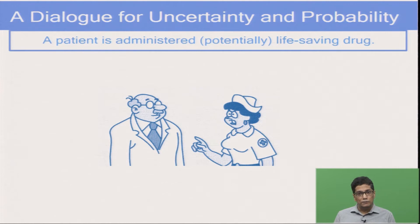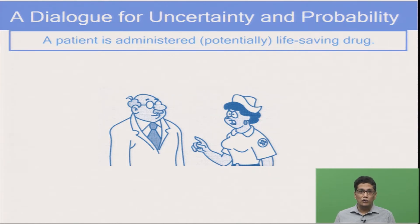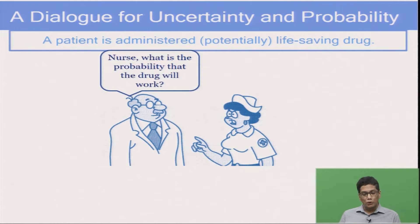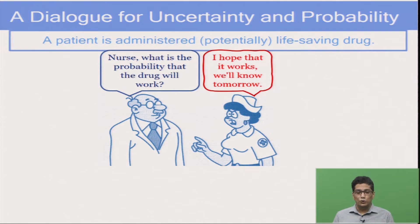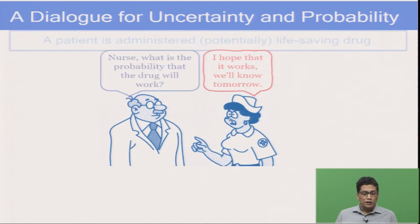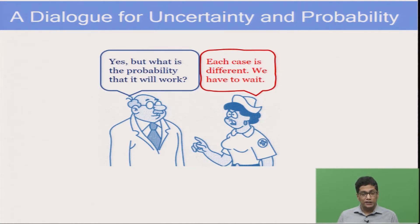The scenario is set in a hospital where a patient is administered a life-saving drug. The relative taking care of the patient is eager to know how the drug will work, so he asks the nurse: what is the probability that the drug will work? The nurse casually answers that she hopes it should work and they will only know tomorrow. But the relative is really concerned about the probability — he is a mathematician. He again asks what is the probability it will work, wanting to understand the exact chance. The nurse just says each case is different and they have to wait.